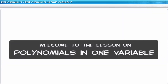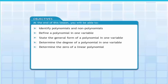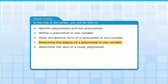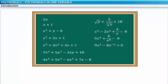Welcome to the lesson on polynomials in one variable. At the end of this lesson, you will be able to identify polynomials and non-polynomials, define a polynomial in one variable, state the general form of a polynomial in one variable, determine the degree of a polynomial in one variable, and determine the zero of a linear polynomial.